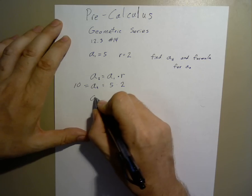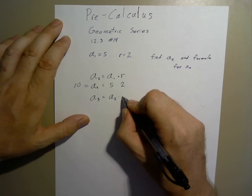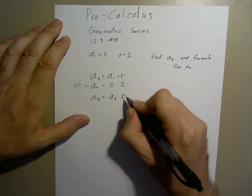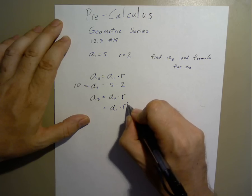Likewise, a3 is a2 times r, or simply a1 times r squared.